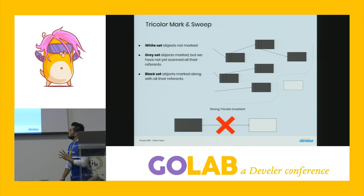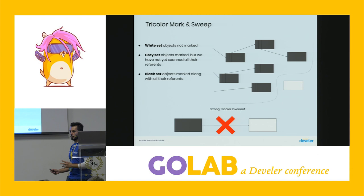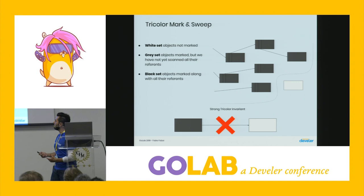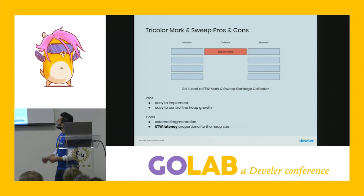An important constraint is that the strong tricolor invariant must hold: we cannot have direct pointers from black objects to white objects. White objects are considered unreachable, so if a black object points to a white object, that white object cannot actually be unreachable. If this invariant is violated, our garbage collector will end up corrupting memory.